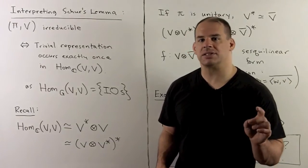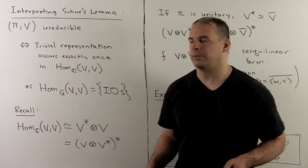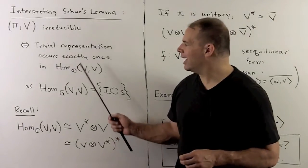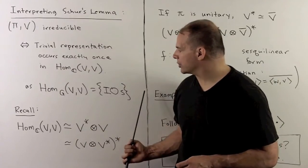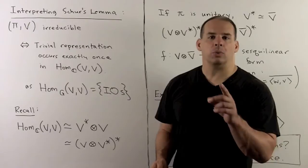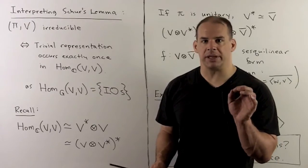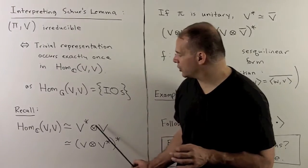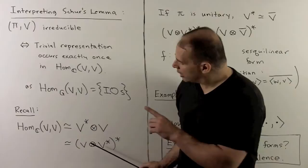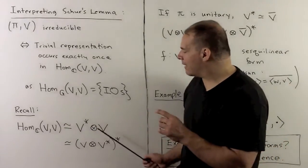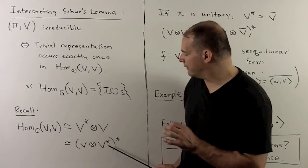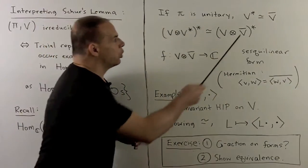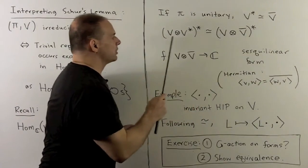Now we can recast Schur's Lemma to say something about unitary representations. If we have pi V irreducible, the previous exercise shows that the trivial representation occurs exactly once in Hom from V to V as the intertwining operators. We can rewrite Hom(V, V) as other familiar vector spaces. We saw that Hom from V to V is equivalent to the dual of V tensored with V itself. By taking the double dual, that gives us the original vector space back, so we have the dual of V tensored with the dual of V. If we assume pi is unitary, the dual of V is equivalent to the complex conjugate of V, so we make this substitution.